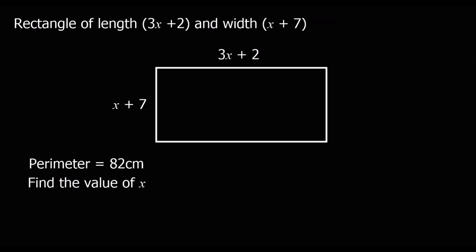You could try and pause the video if you think you can form and solve your own equation, or you could keep watching. We've got a rectangle of length 3x plus 2 and width x plus 7. The perimeter is 82 centimeters.